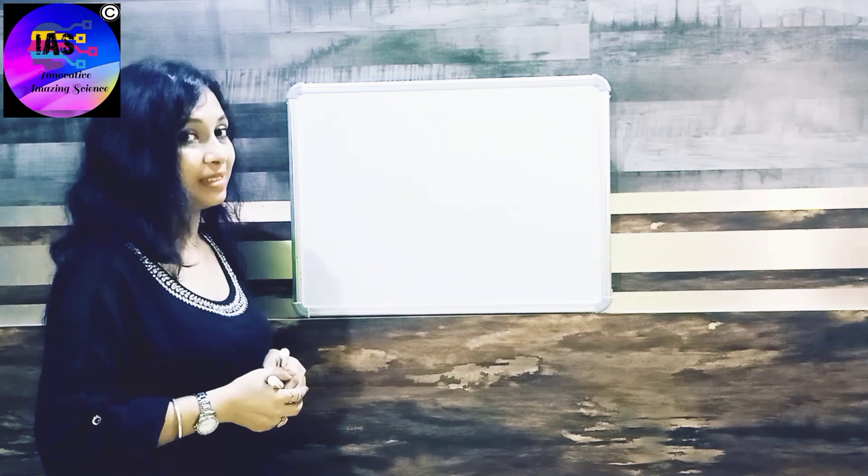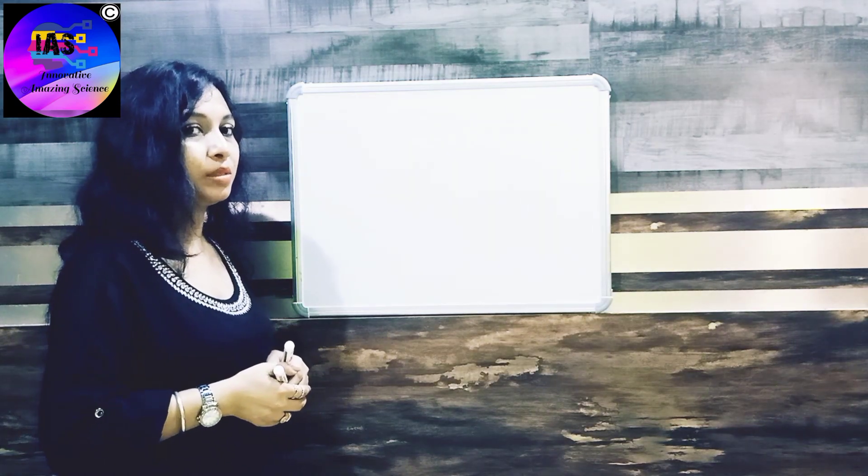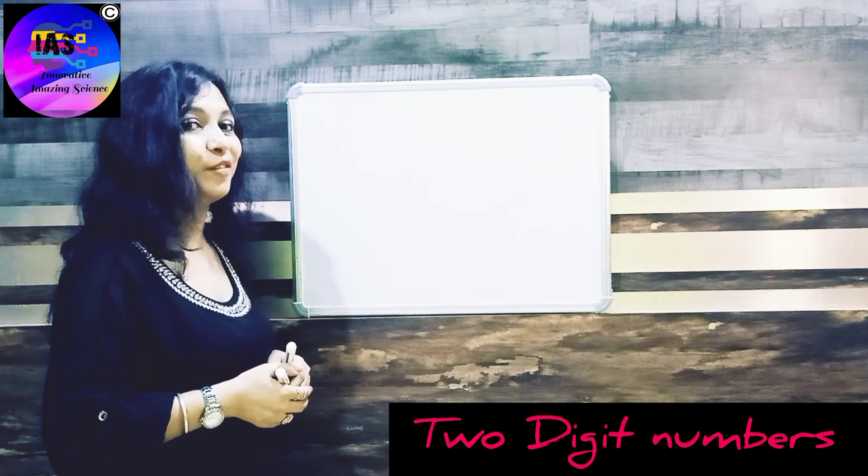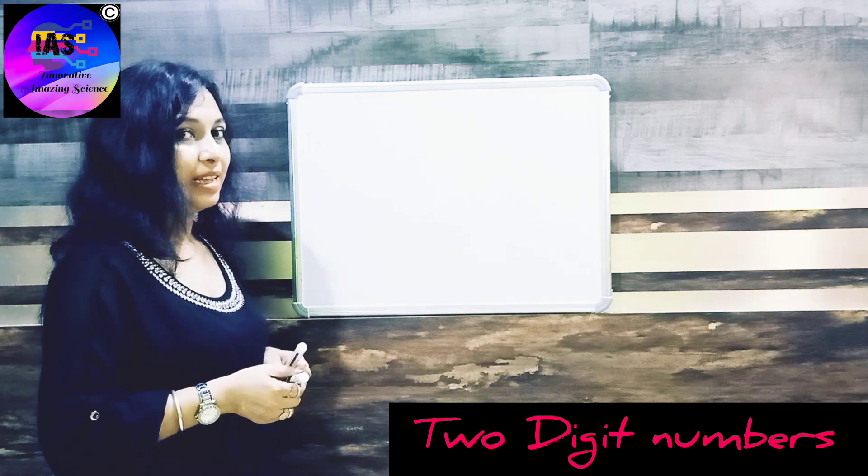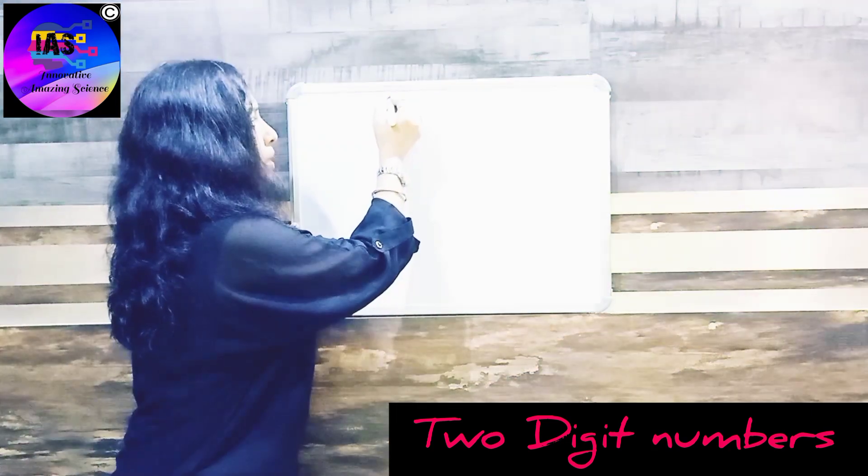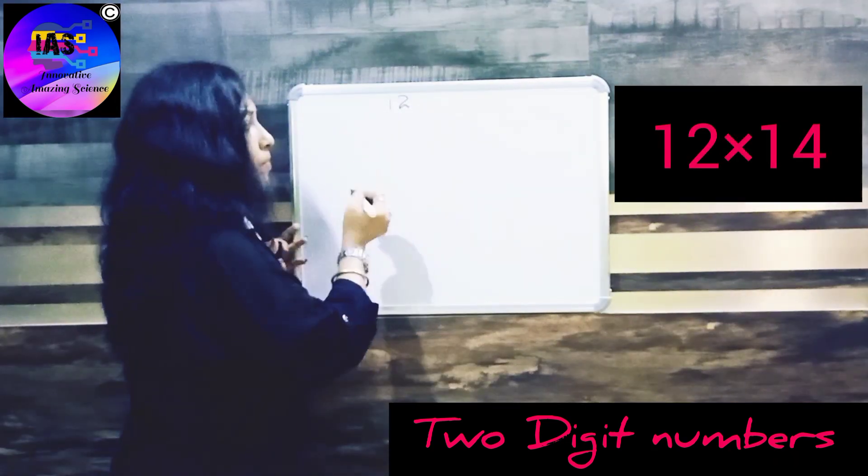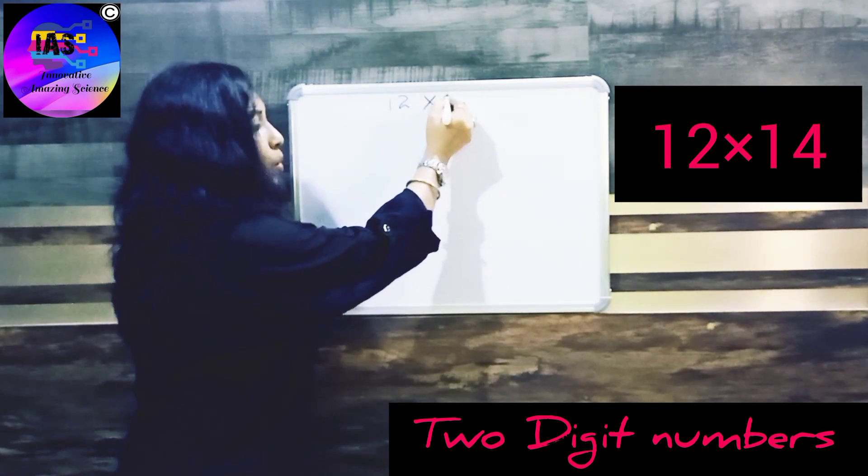So let's see how this trick works. For this, I would use two-digit numbers, and a very simple one. So my first number would be 12 multiplied by 14.